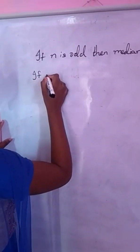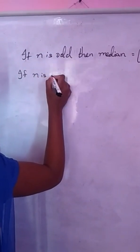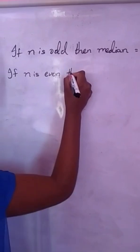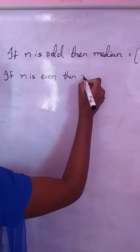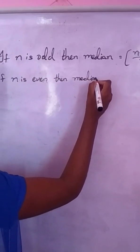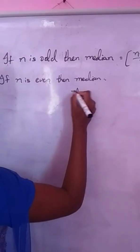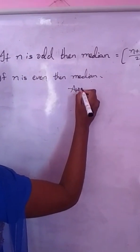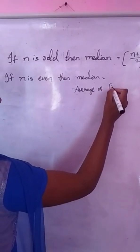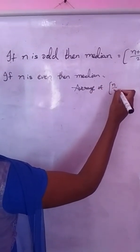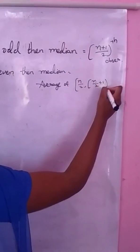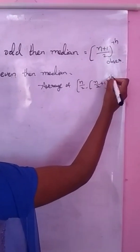If N is even, then median equals to the average of the N by 2 and N by 2 plus 1st observation.